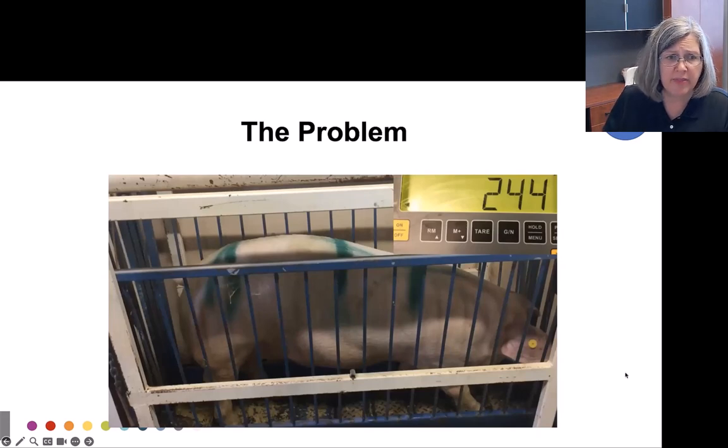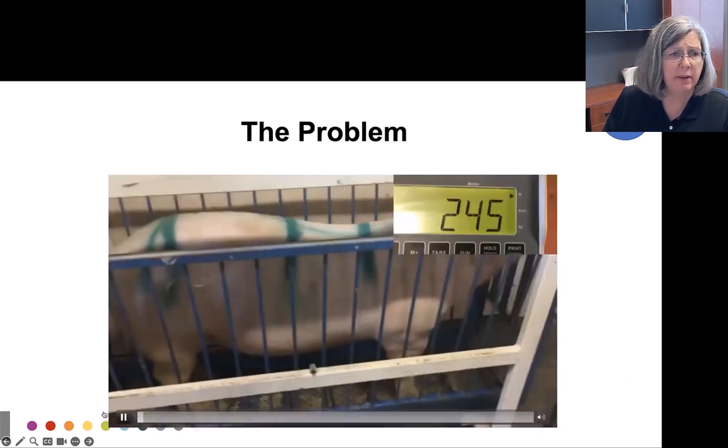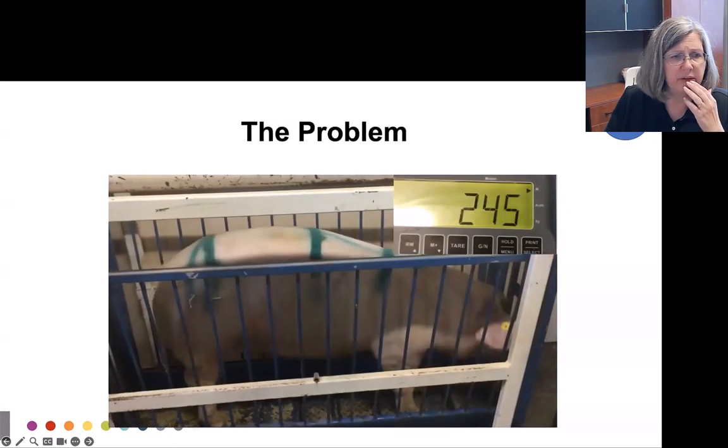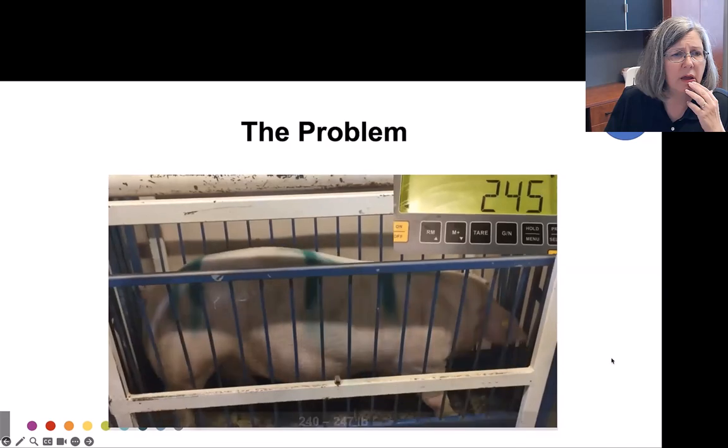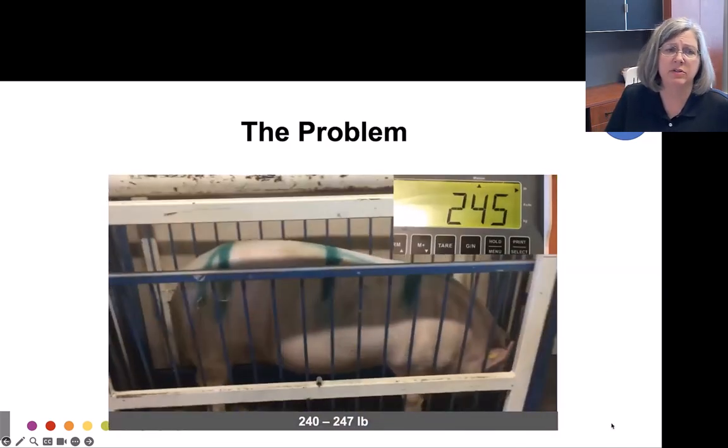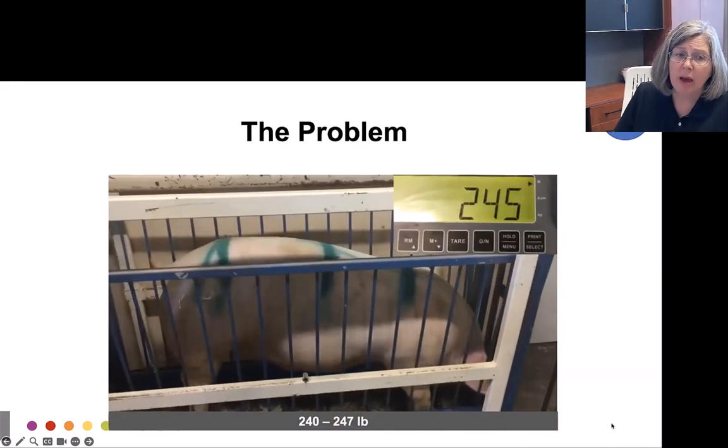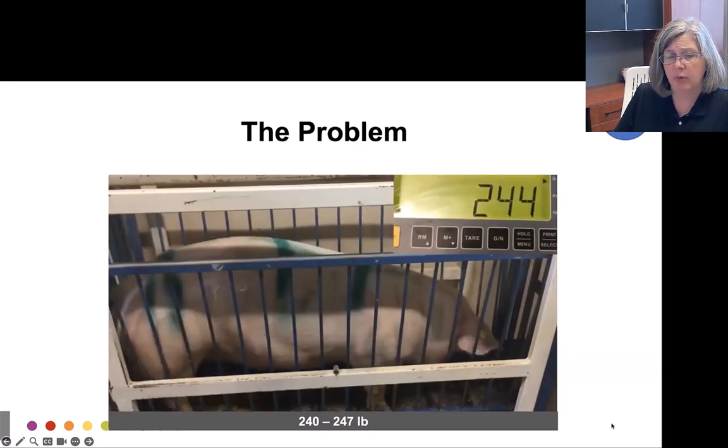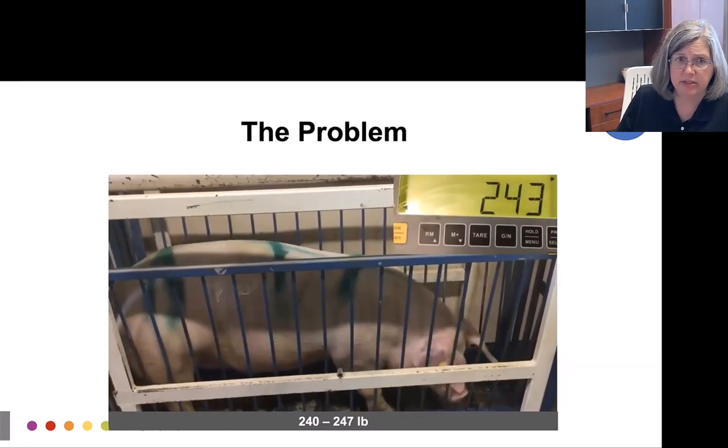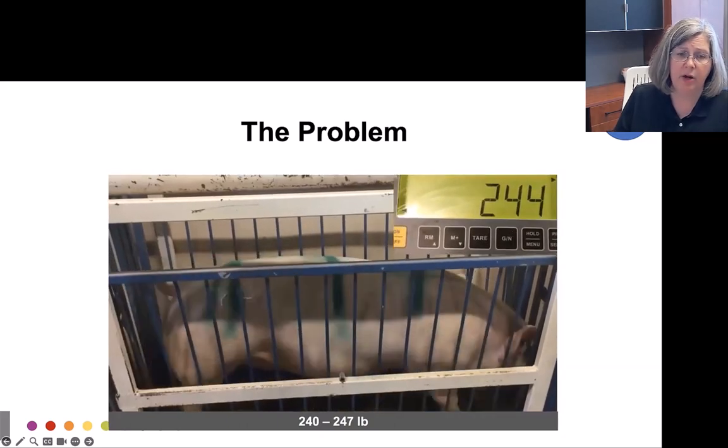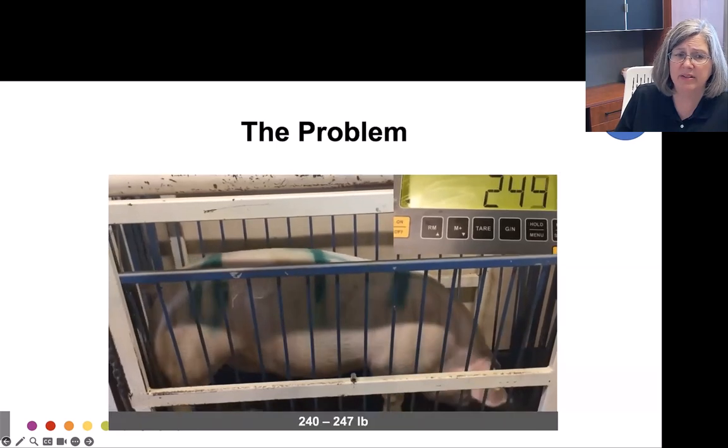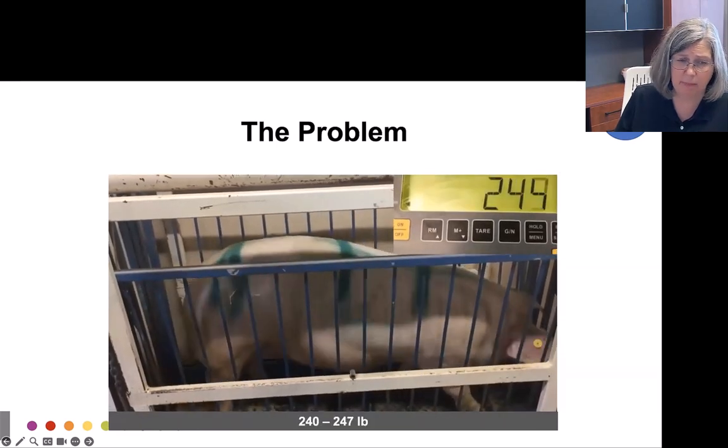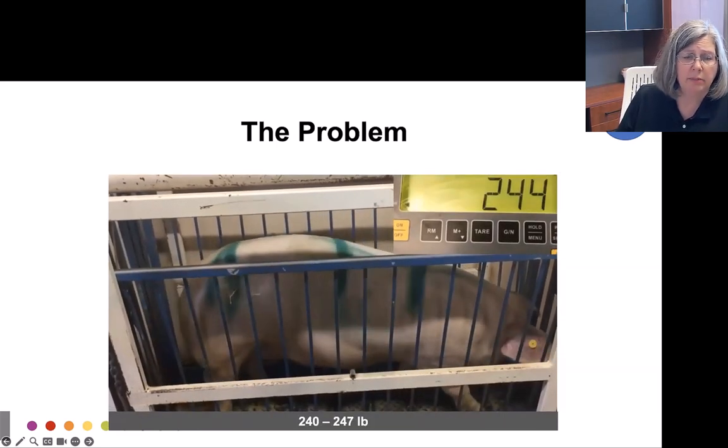That varied by, let's see if I can get this, by seven pounds plus or minus seven pounds, which was about what our error is when we look at our regression analysis. So a lot of our error in our estimation of weight comes from our golden standard, or the weight on the scale, which isn't very perfect. But we can we can live with that error.